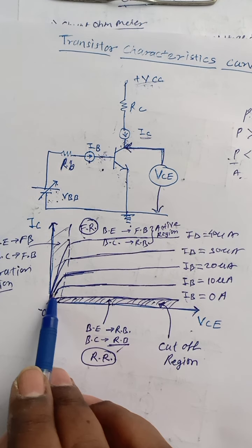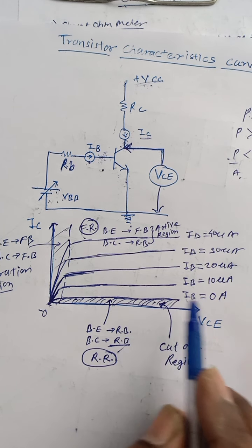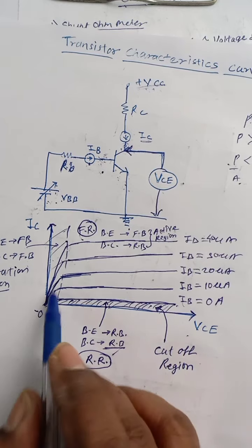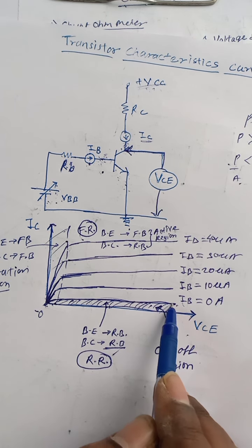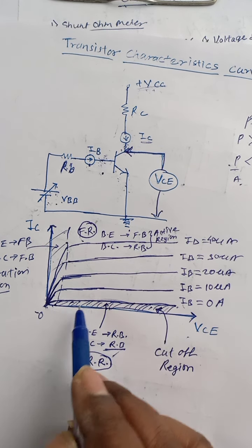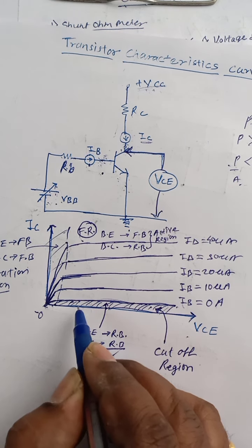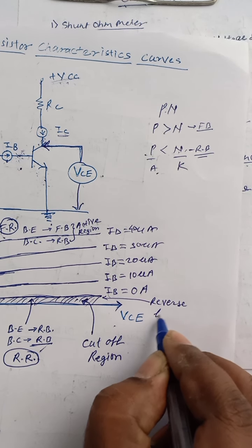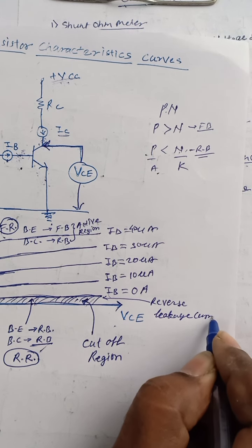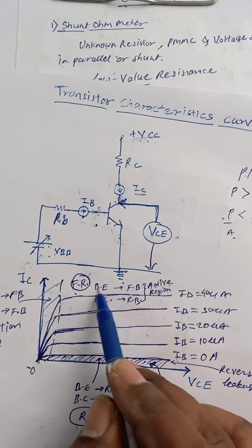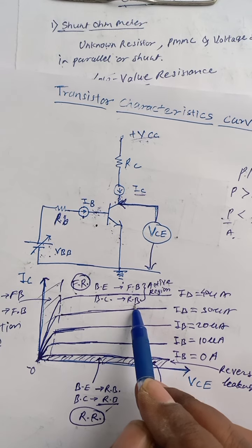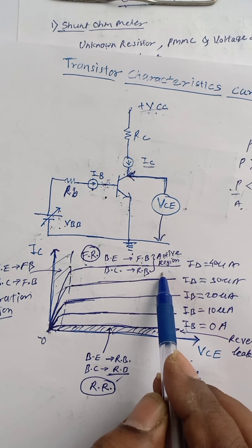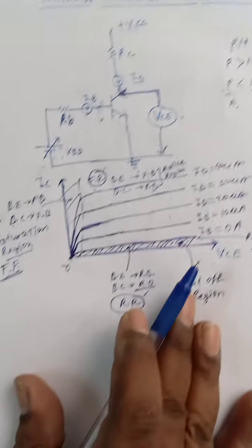This collector current is known as reverse leakage current. In this active region, base-to-emitter junction is forward biased and base-to-collector junction is reverse biased because of the high VCC voltage. This is called the FR condition and is known as the active region.